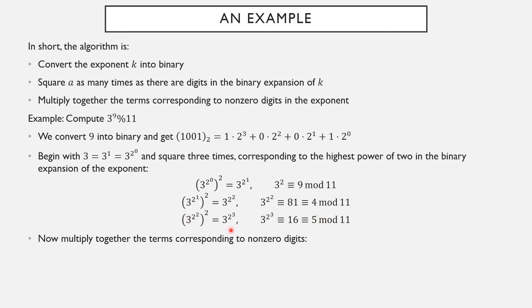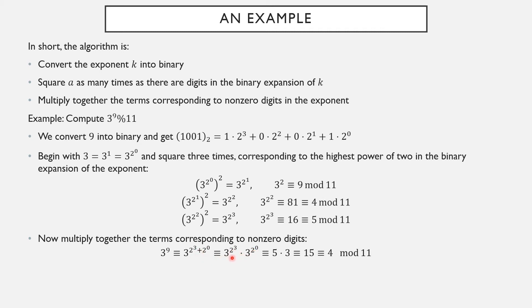3 to the 2 to the 0 and 3 to the 2 cubed were my non-zero digits in this expansion — 2 to the 0, not 2 to the 1st, not 2 squared, but yes 2 cubed. So I look for my terms corresponding to 2 to the 0 and 2 cubed: that's 3 and 5, and I multiply those together. 3 to the 9th — well, 9 was 2 cubed plus 2 to the 0, so 3 to the 9th is 3 to the 2 cubed times 3 to the 2 to the 0. 3 to the 2 cubed is equivalent to 5 mod 11, and 3 to the 2 to the 0 was equivalent to 3 mod 11. So this is equivalent to 5 times 3, or 15. But mod 11, that's just 4. So overall, 3 to the 9th is equivalent to 4 mod 11.